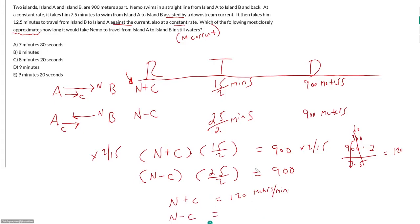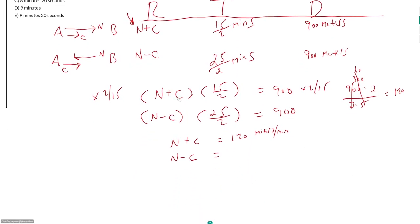Then here, N-C should equal—I want to multiply each side by 2 over 25 to cancel out this fraction—900 times 2 over 25. 25 goes into 100 four times, therefore it should go into 900 36 times. This would be 72 meters per minute. That makes sense—when he's going with the current he's going significantly faster than against the current. He's almost half as fast against the current.